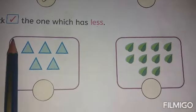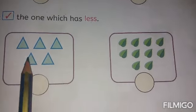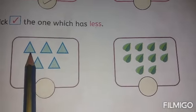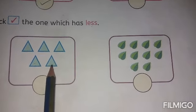See the next one. Pick the one which is less. Let us see which is less and which is more. This is a triangle. 1, 2, 3, 4, 5. 5 triangles.